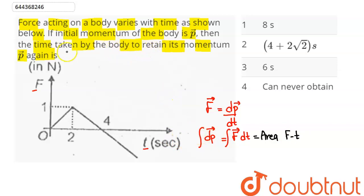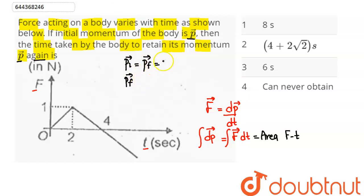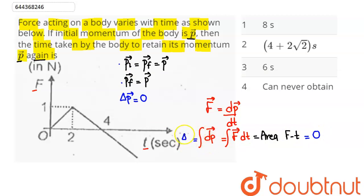The question asks for the time taken by the body to retain its momentum P vector again. For this, the total area under the graph shall be equal to zero. Since initial momentum equals P vector and final momentum also equals P vector, the change in momentum ΔP = final momentum − initial momentum = 0. Hence the net area under the force-time graph becomes zero.